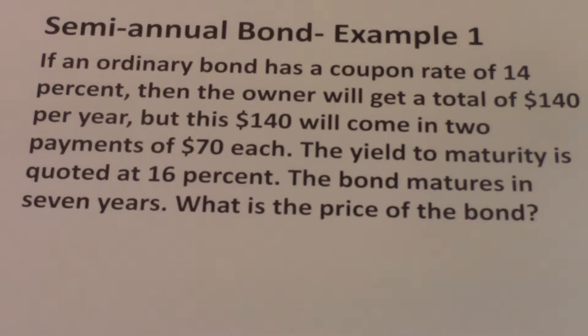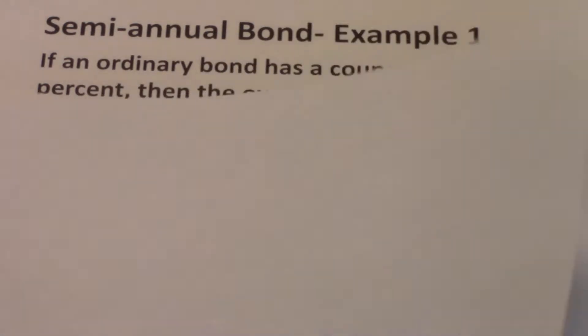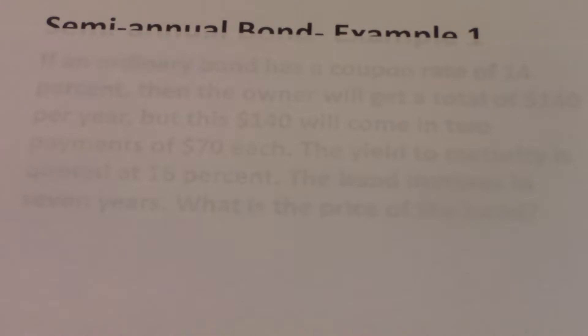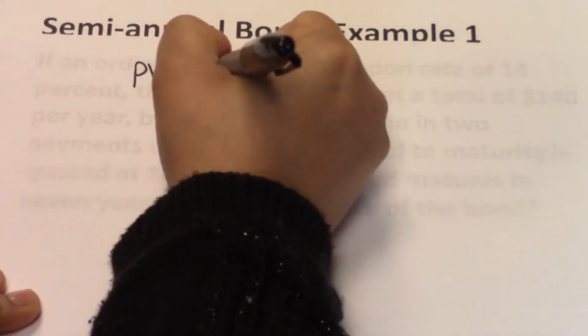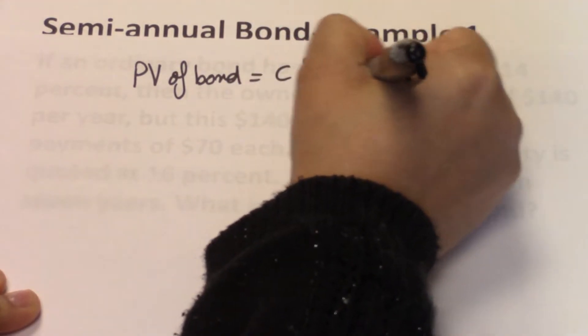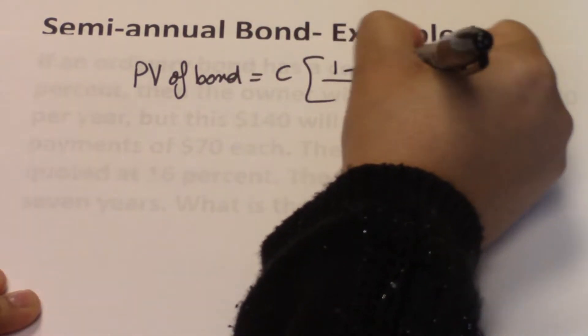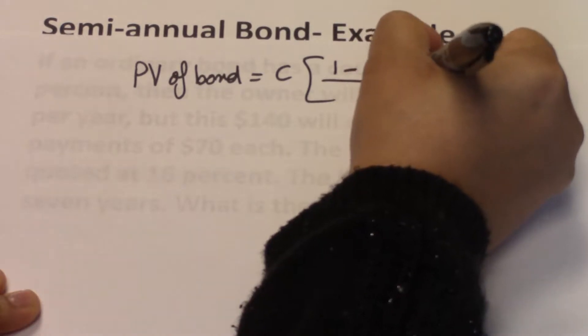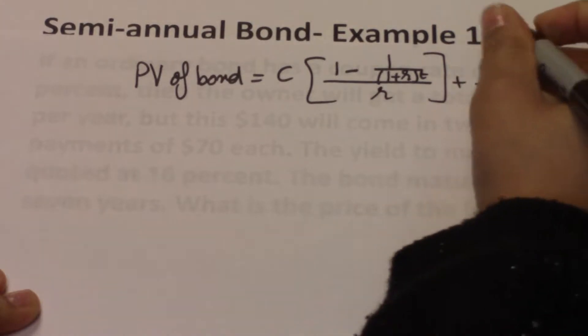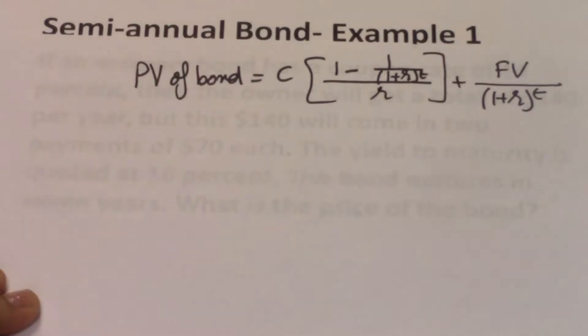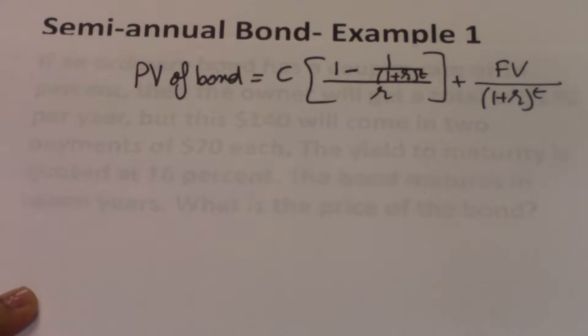So here we're trying to determine the price of a bond that pays semi-annual coupons. And we will use the present value of the bond formula that says that PV of bond equals to C times 1 minus 1 over 1 plus r to the power t over r, and we add plus the face value divided by 1 plus r to the power t. So this is the formula that we have been using.